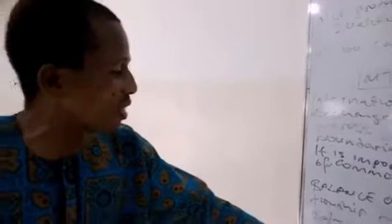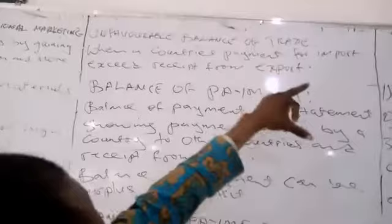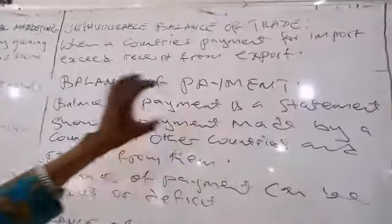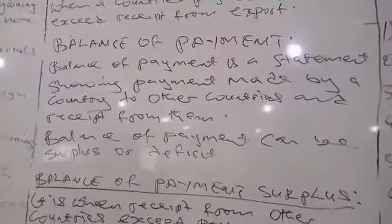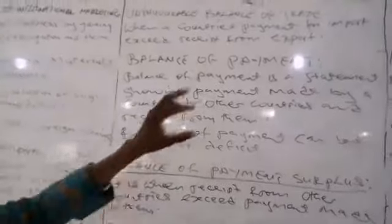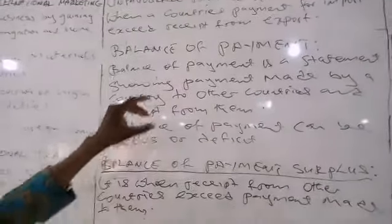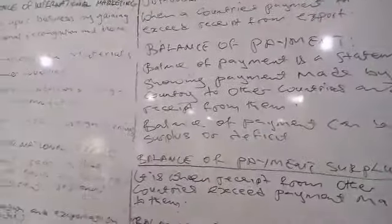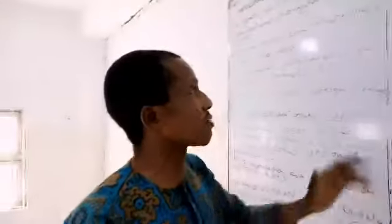When the money that you are receiving from other countries is more than what you are paying, the balance of trade is favorable. Unfavorable balance of trade is when you are paying more for imports than what you are receiving from exports — that is, when the money you are receiving is less than what you are paying. In that case, the balance of trade is unfavorable.